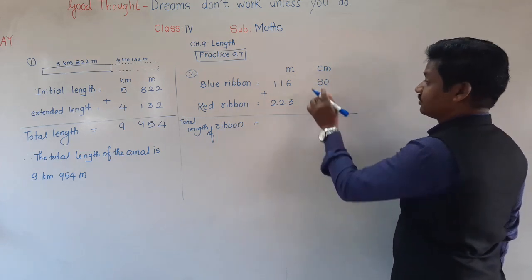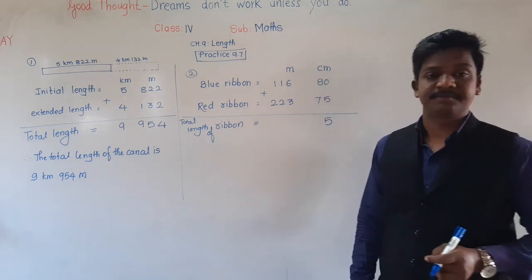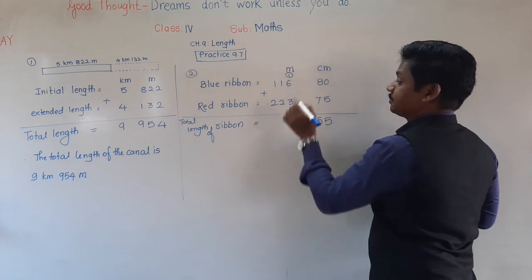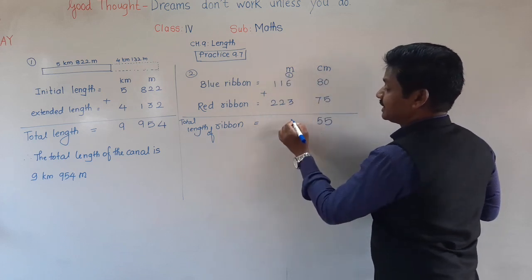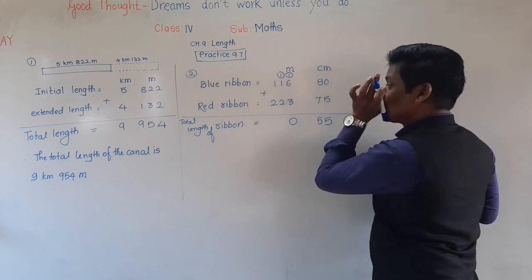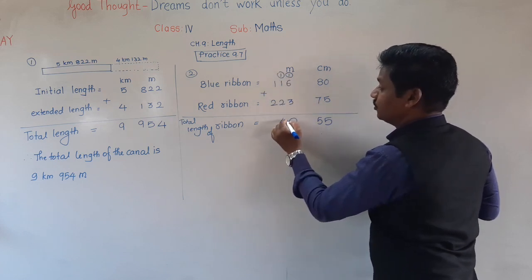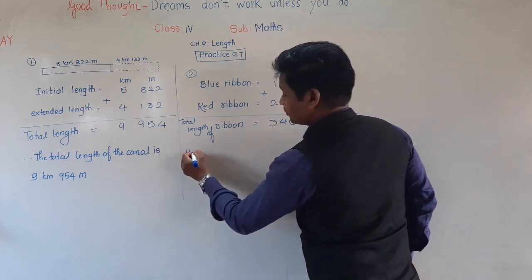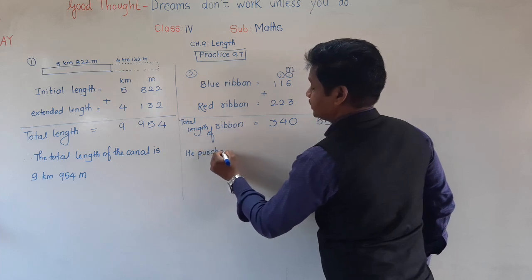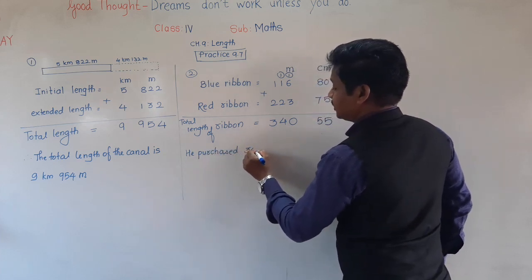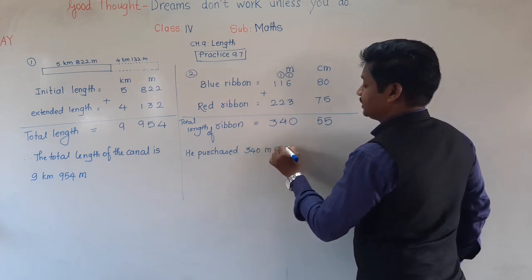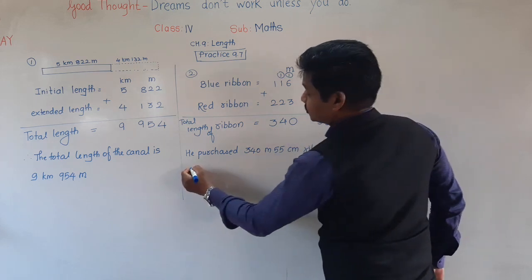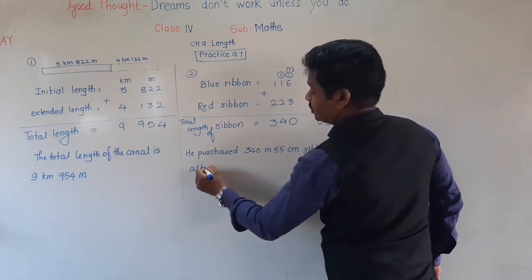So, 0 plus 5 is 5. 8 plus 7 is 15, so 5 will come down and 1 will be carried. 6 plus 3 is 9, and 9 plus 1 is 10, so 0 will come down and 1 will be carried. 1 plus 2 is 3 and 1 more makes 4, and here 3. So the shopkeeper purchased 340 meter, 55 centimeter ribbon altogether.